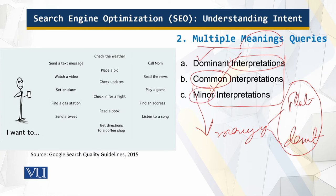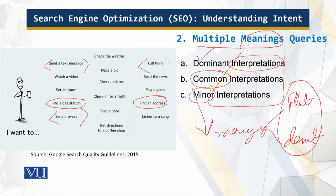Then there are minor interpretations, which are dependent upon the locale. Looking at example actions: find a gas station, find an address, send a text message, send a tweet, call mom — the intents here are all different. Based upon the intents, the results are displayed. The intents translate into the results — that is the key point.